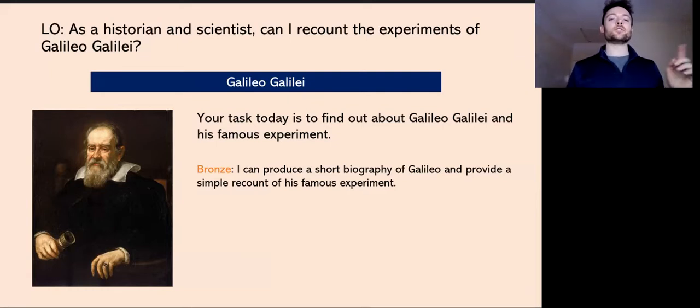So, bronze: I can produce a short biography of Galileo and provide a simple recount of his famous experiment. So you're going to give me a tiny bit of information about Galileo, who he was, where he came from, you know, what country he was in, what did he do, what was he famous for. But don't, not very much, it only has to be a little bit. And then give me a little recount of his famous experiment. That's bronze.